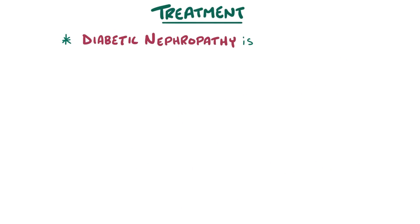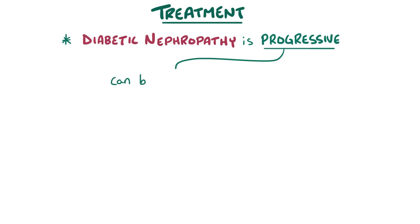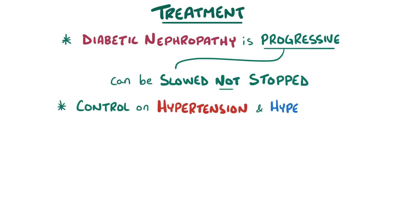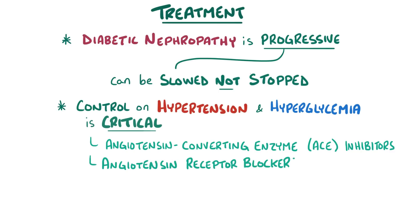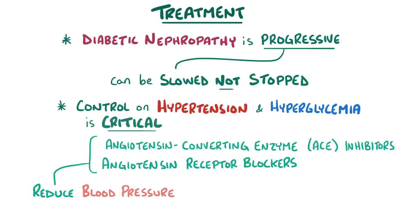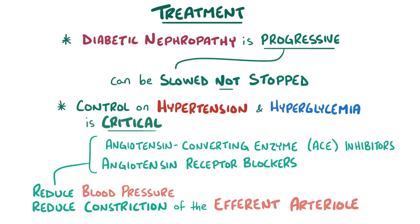Unfortunately, diabetic nephropathy is a progressive complication that can be significantly slowed down but not completely stopped. Keeping tight control on hypertension and hyperglycemia is critical. Specifically, angiotensin-converting enzyme inhibitors — ACE inhibitors — as well as angiotensin receptor blockers can be particularly useful. These not only lower blood pressure overall, but also specifically reduce constriction of the efferent arteriole, thereby reducing pressure within the glomerulus and the damage that comes from it.